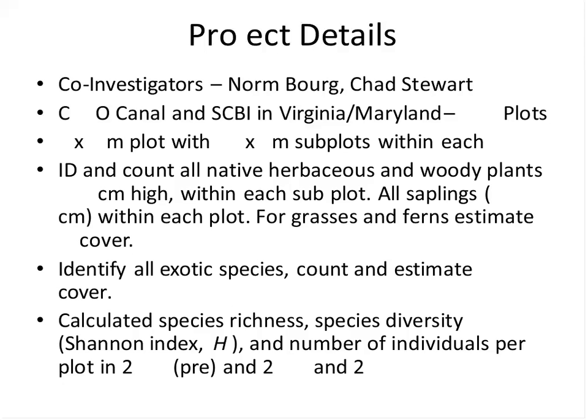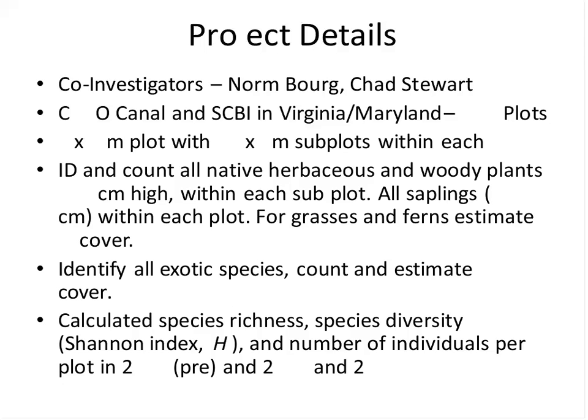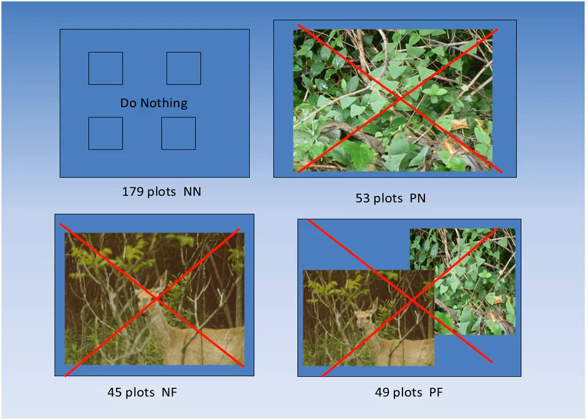We conducted this study at the C&O Canal national park and our research center in Front Royal, with co-authors Norm Borg and Chad Stewart. It was done on a small scale — four-by-four meter plots with subplots to assess woody and herbaceous content. The four treatments were: control (no action), invasive removal only, deer fencing only, and both invasive removal and deer fencing combined.